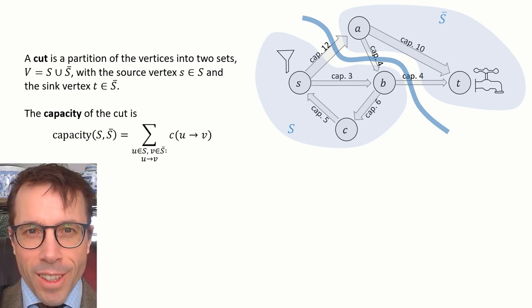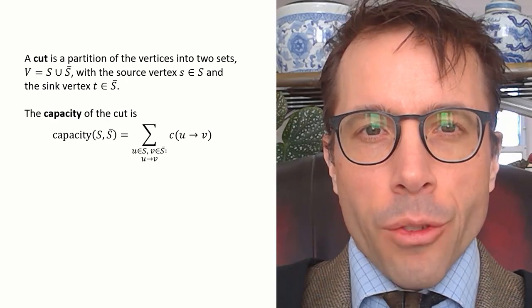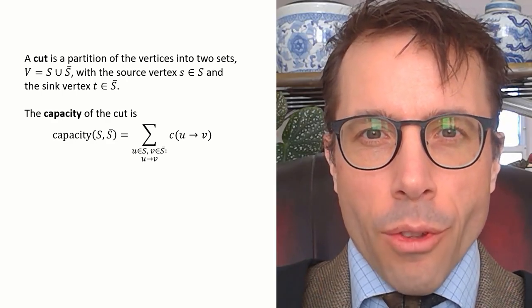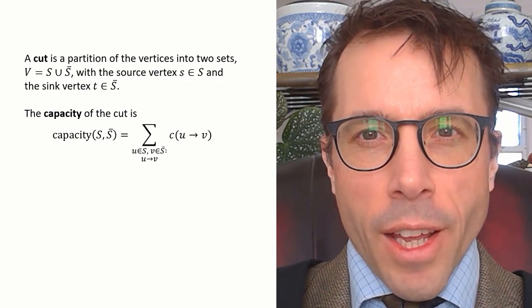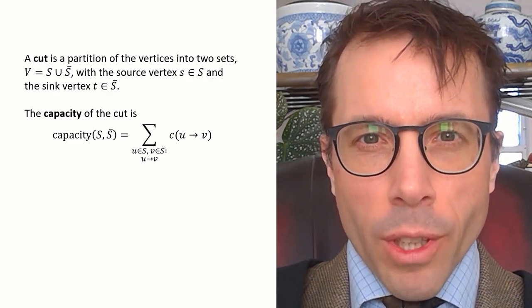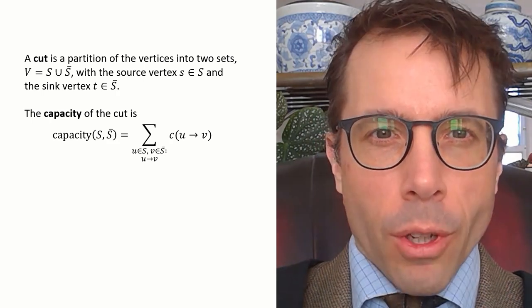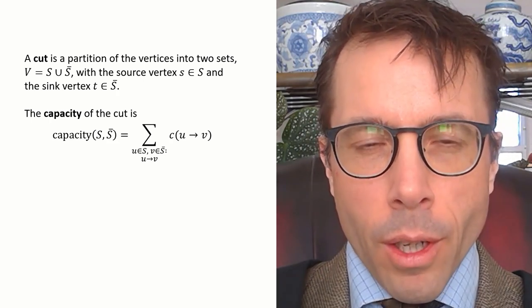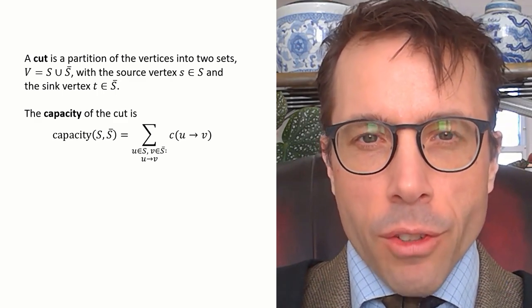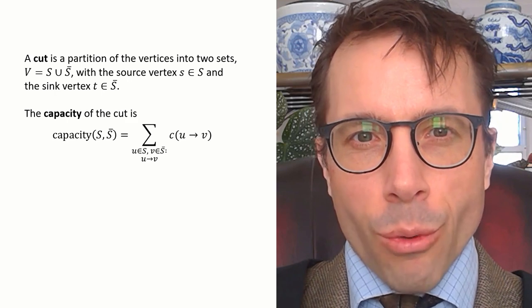If you said 20, try again. Let's rearrange our vertices so that the set S is on the left and the set S bar is on the right. If we read the definition closely, we see that we're only meant to add up the capacities of edges that go from left to right. So the capacity of this cut is 12 plus 4, which is 16. We ignore the edge that goes right to left.